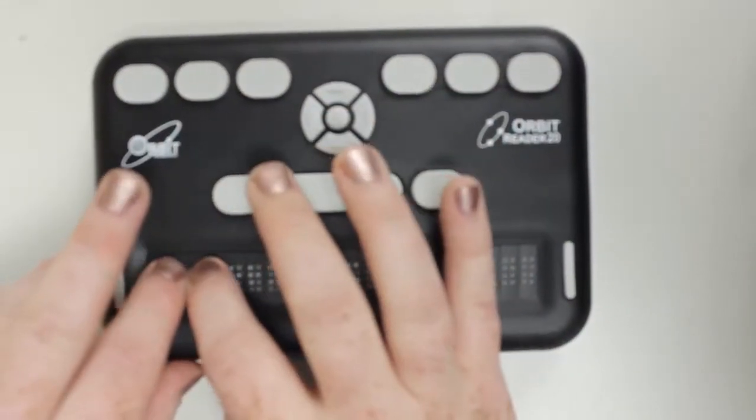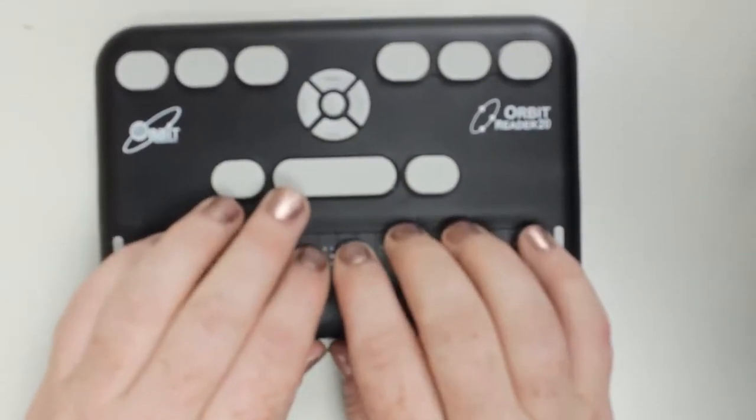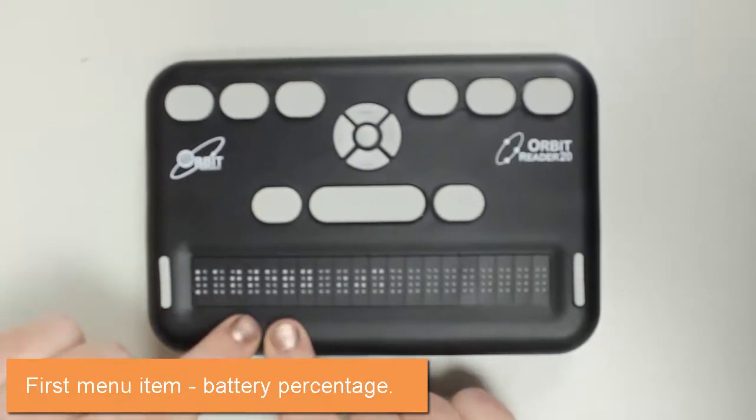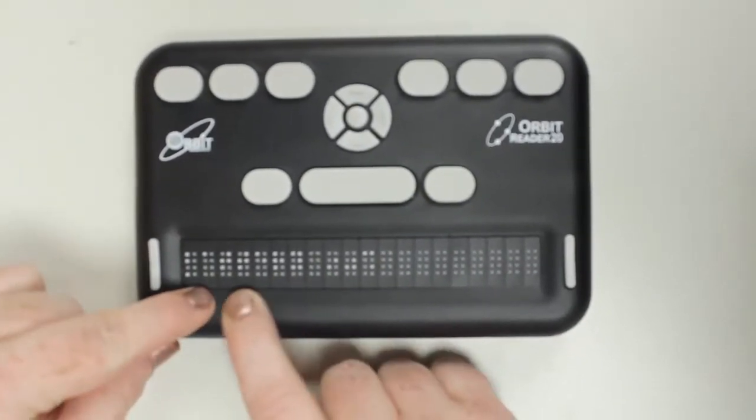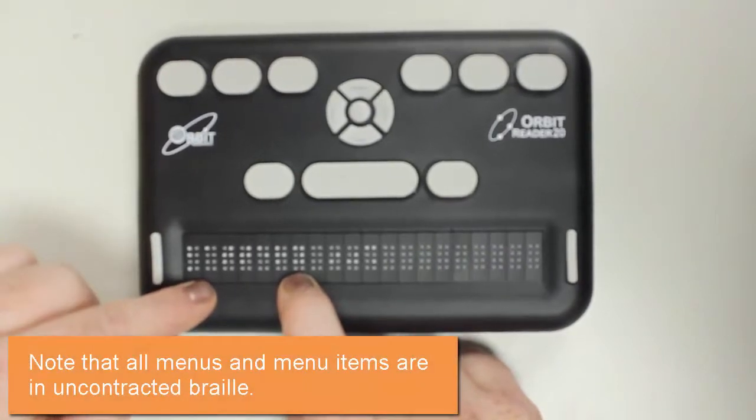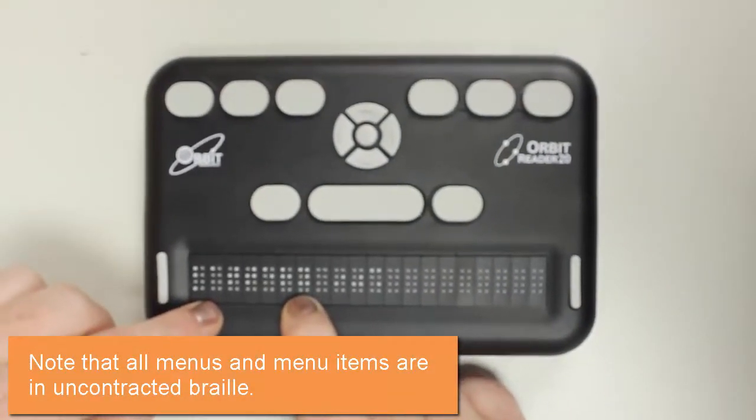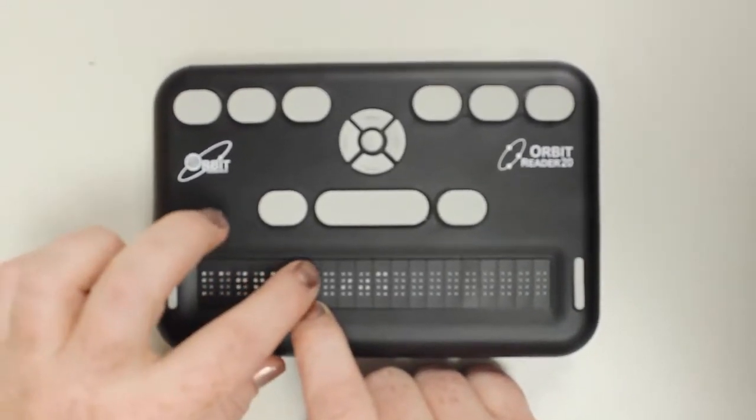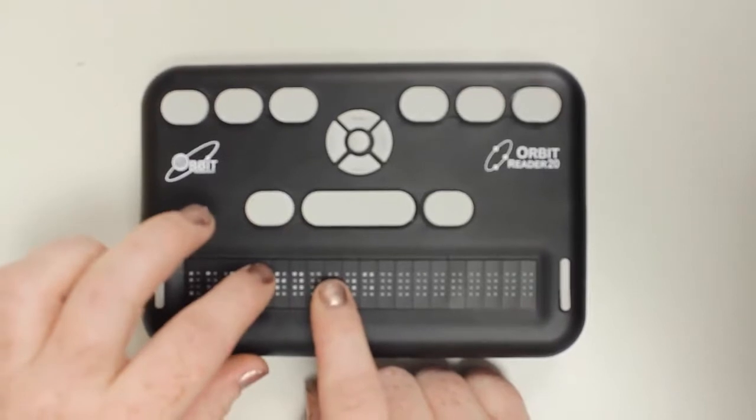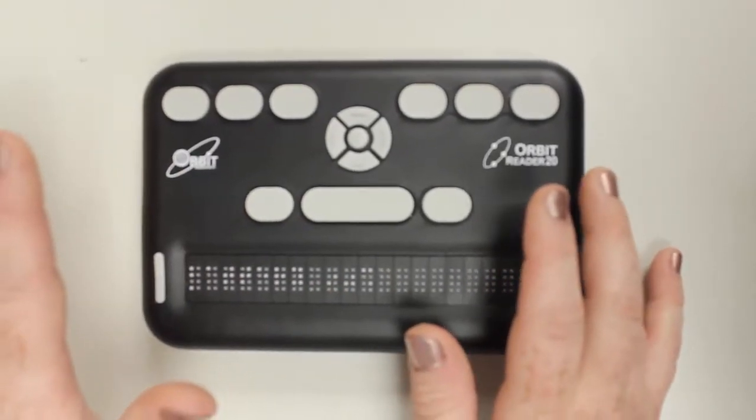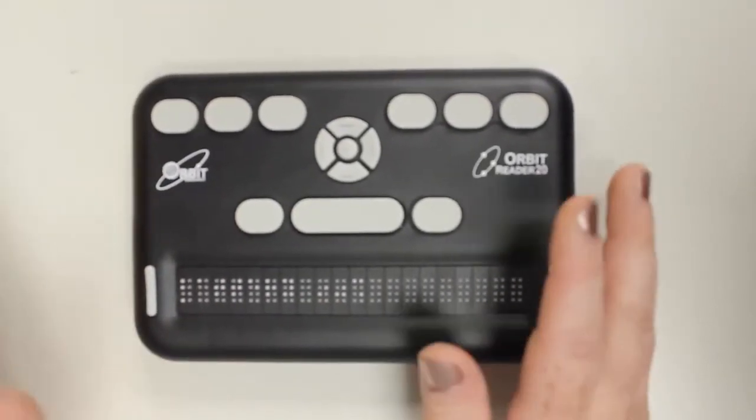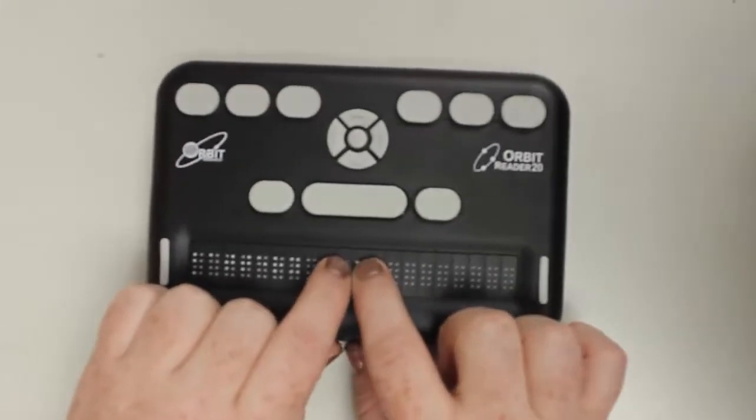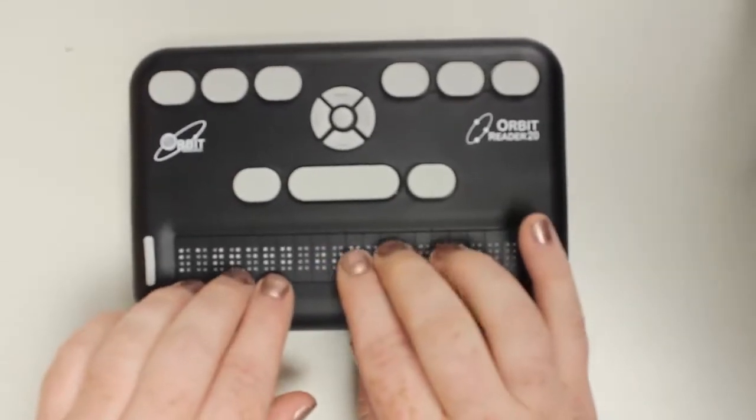The first thing that's on here is the battery level. Right now, my battery is at 90%. This is completely uncontracted braille, and remember that's because there's no translation. So if your students get mad that it's in uncontracted braille, that's why you can explain that to them. The first thing that comes up is the battery level, which is nice because that's the first thing most of us want to know about.